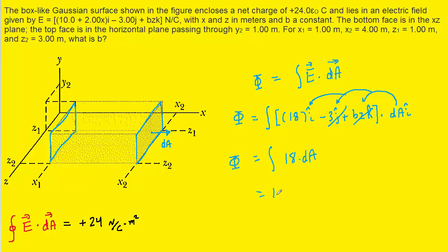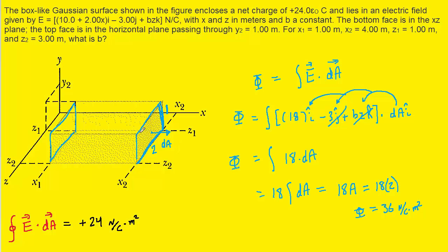Since 18 is a constant, we factor it out of the integral, and the integral of dA is just the area A. We need the area of the rectangular right face: the width is y2 = 1 meter, and the length is the distance between z1 = 1 meter and z2 = 3 meters, giving 2 meters. So the area is 2 times 1 = 2. Therefore, 18 multiplied by 2 gives 36 newtons per coulomb times meters squared — the electric flux through the right face.